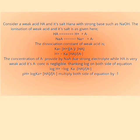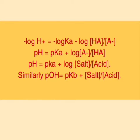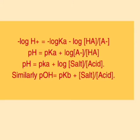Dear students, the negative log of hydrogen ion concentration is equal to pH. Similarly, for weak bases and their salts with strong acid, the pOH will be equal to pKb — the potential of the dissociation constant for the base — plus log of the molar concentration of salt divided by the molar concentration of base.